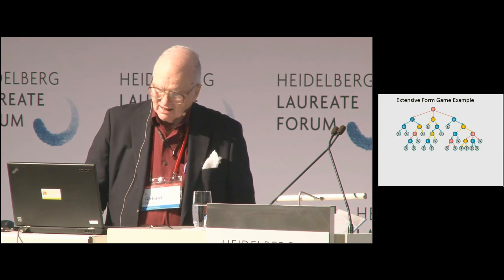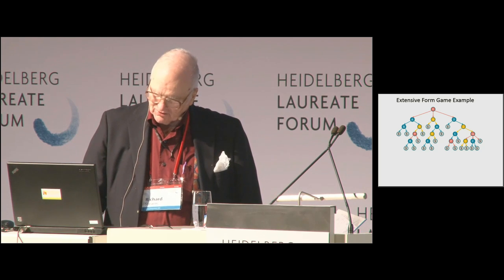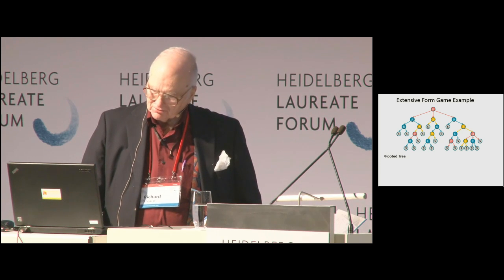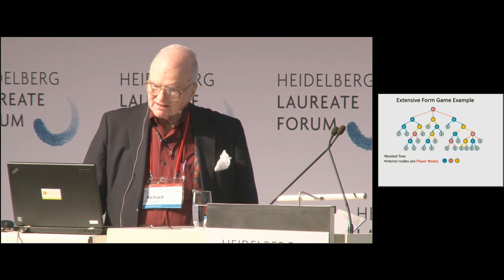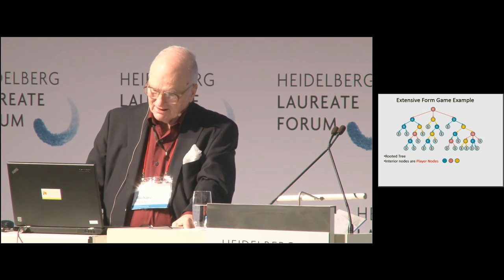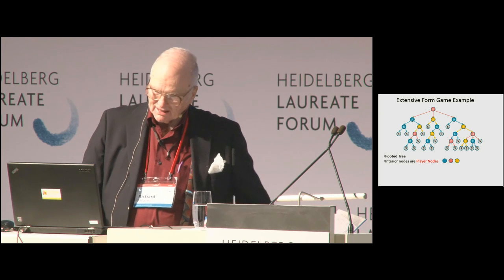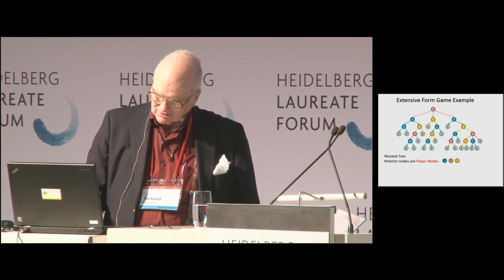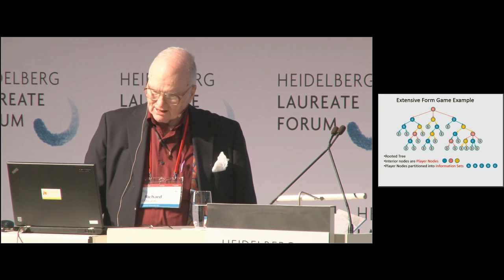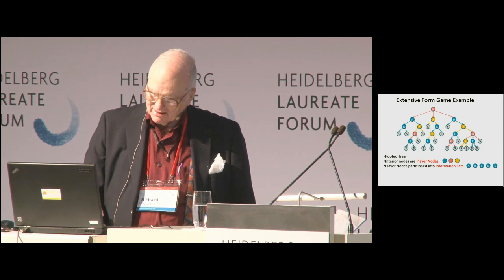Let's look at what an extensive form game is more generally. First, it's a rooted tree — the game starts at the root and proceeds. The interior nodes are called player nodes. In this case, I have three players: blue, red, and yellow. All the interior nodes are one of those three colors. The nodes of each player are partitioned into information sets, which I've indicated by labeling the nodes. In this case, blue has five sets going from A to C.